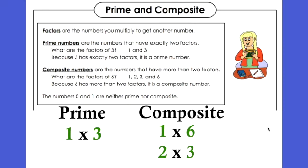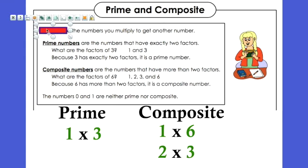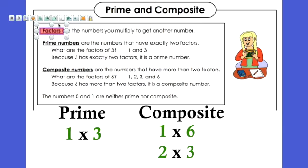Before we get started in our workbook, I want you to copy down a couple of definitions. The first thing we're going to learn about — we've learned about factors, right? Those are the two numbers that we multiply together to get another number. Factors are the numbers you multiply to get another number, like 3 times 5 is 15. So 3 and 5 are my factors.